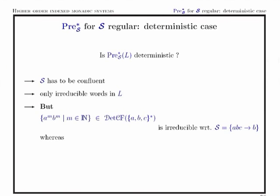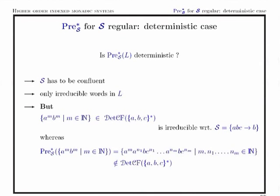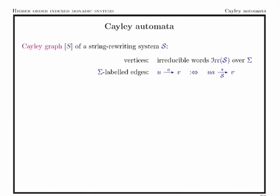However, even with these restrictions, the following example shows that if we take a deterministic context-free language and apply a single-step rewriting rule, we get a context-free language that is not deterministic context-free. So it is not straightforward to preserve determinism.